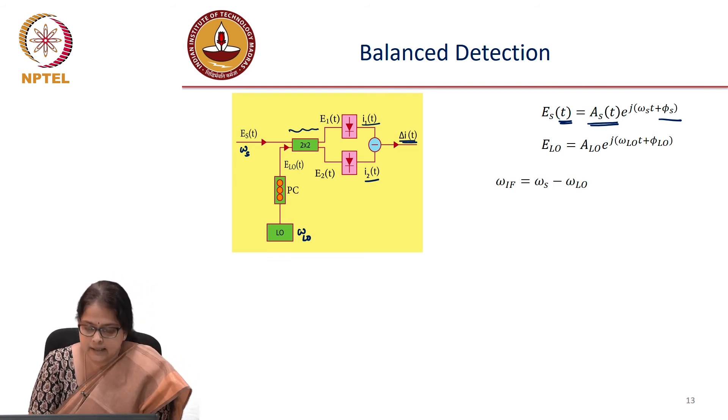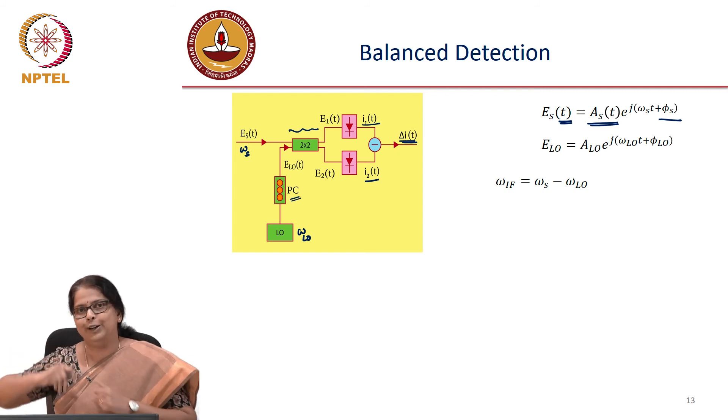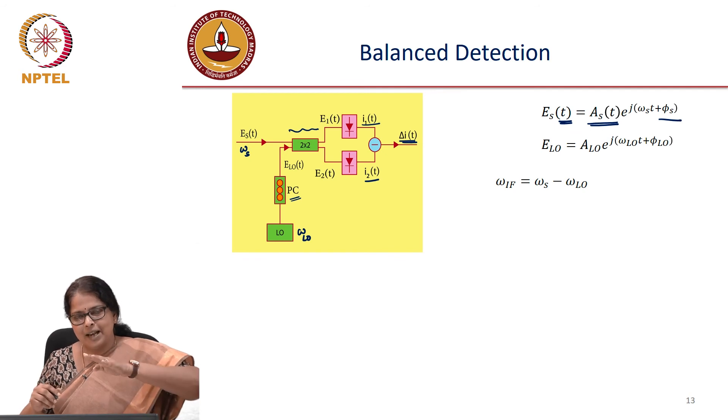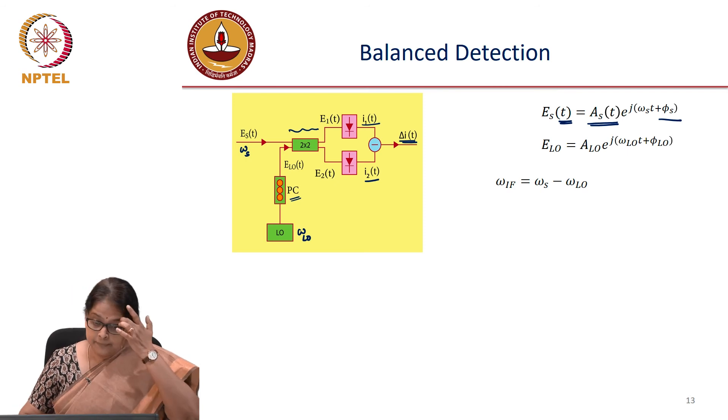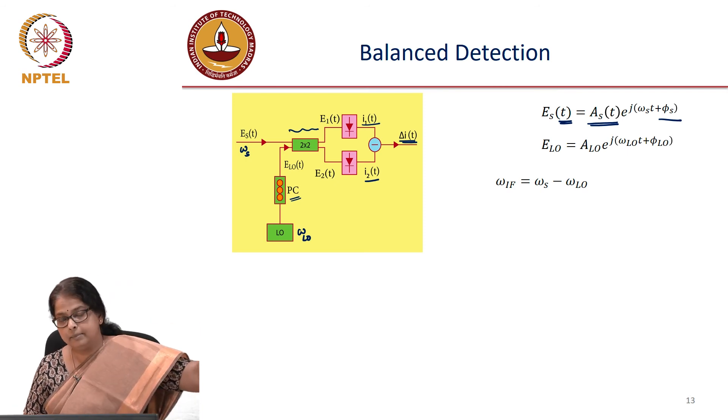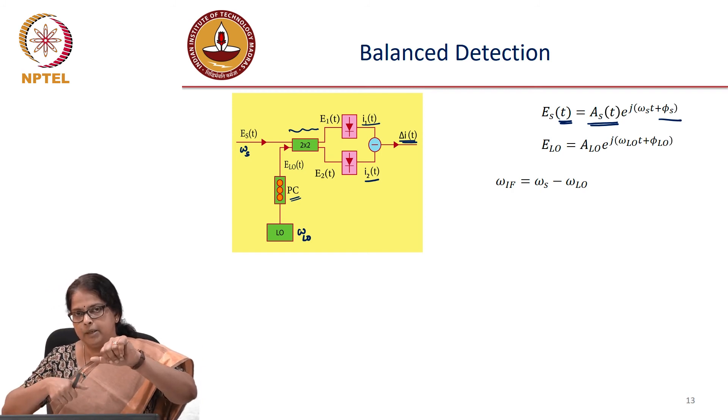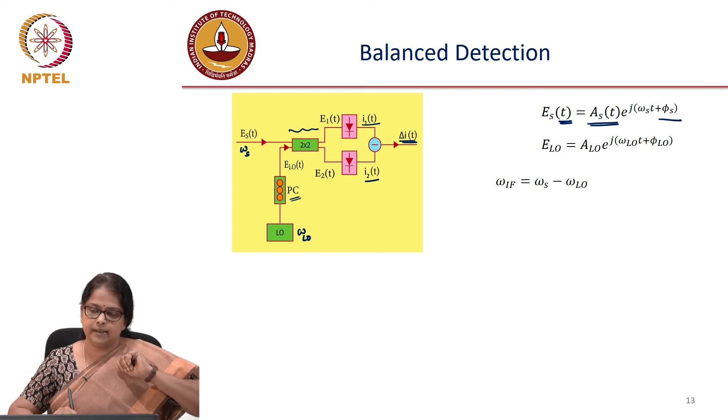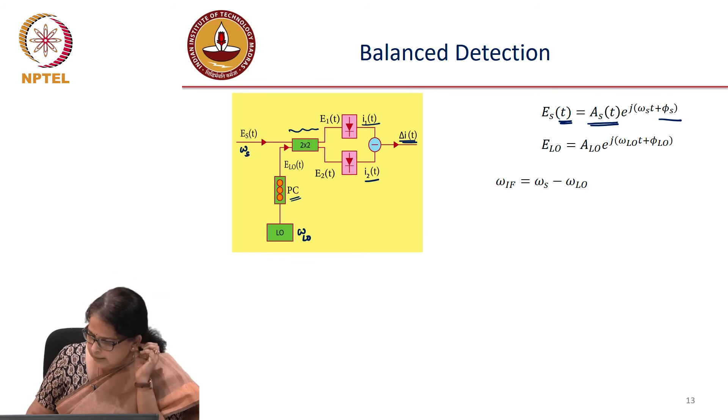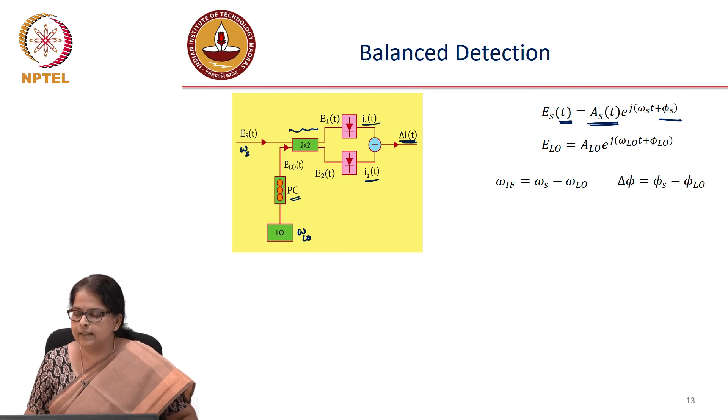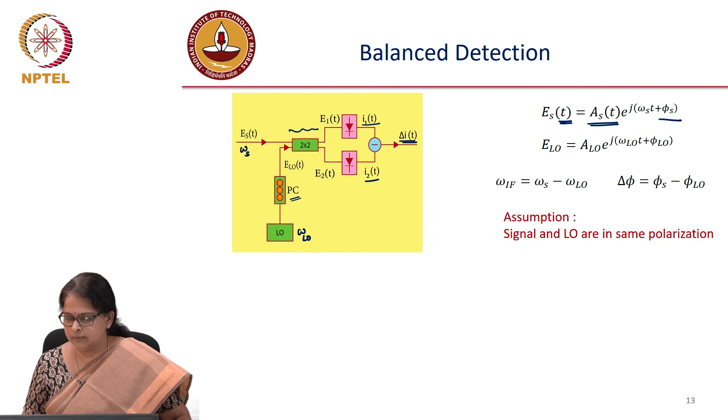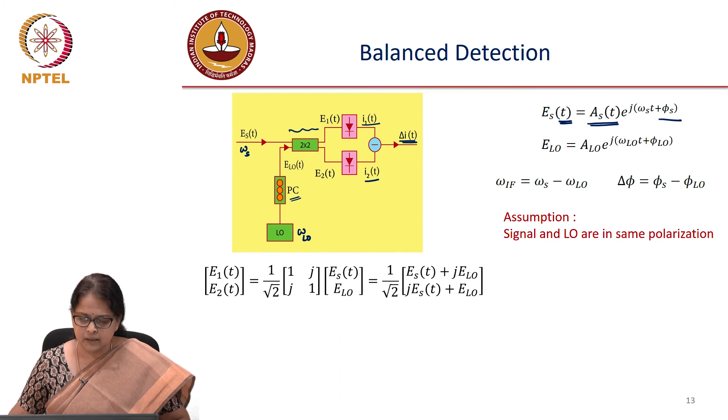Now you see that there is a polarization controller here, which will help to align the polarization of the LO along with that of the signal. So we are talking about a modulation that is having single polarization and we are trying to beat it with the LO with the same polarization. IF frequency is, of course, omega_s minus omega_LO and let us define delta phi as phi_s minus phi_LO. And as I said earlier, signal and LO are in the same polarization.